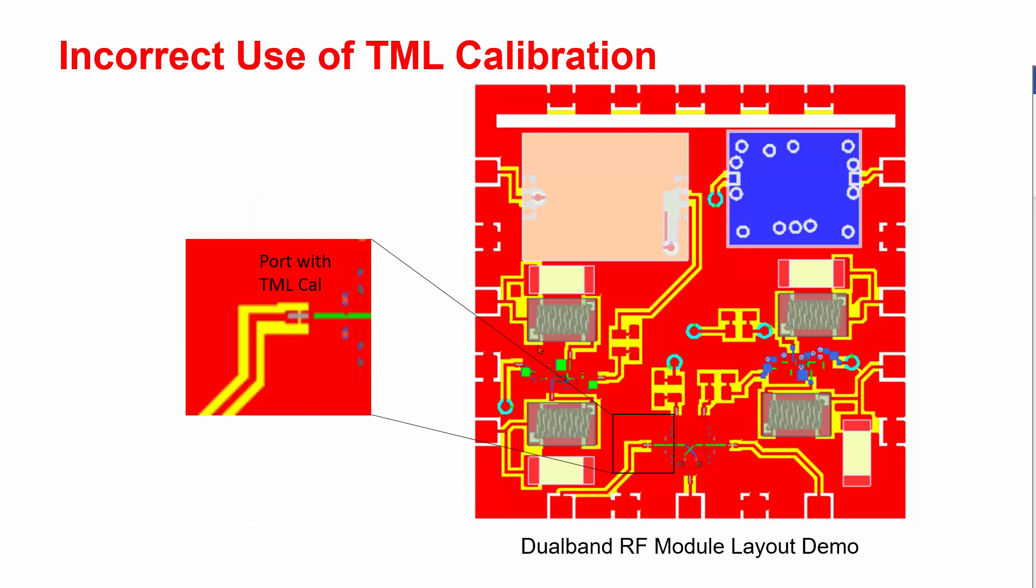In a real design like this, if the feed line is very short, but modeled with the TML calibration, you may see a higher inductance value from the results. Since the added mutual coupling from the TML calibration is based on the longer line, which will result in inaccurate calibration.